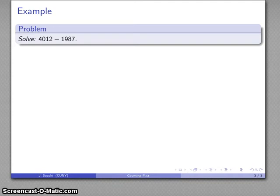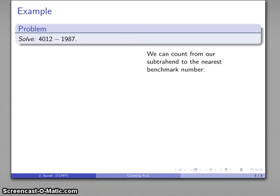I'm going to subtract 1987, so probably the nearest benchmark number looks like it's going to be 2000. I can figure that out in my head—I know that's plus 3 plus 10 will take me to 2000, plus 13 total.